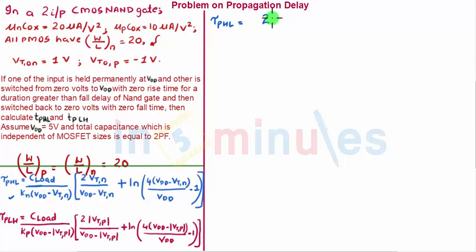So let's write that quickly: 2 × 10^-12 upon K_N. K_N is nothing but μ_n C_ox W/L of NMOS, which is 20 × 20 microampere per volt squared.